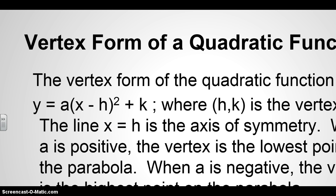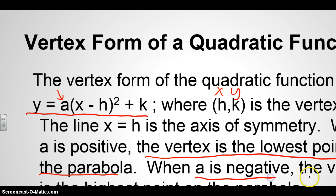So the first idea we're going to talk about today is the vertex form of a quadratic function. And the vertex form of a quadratic function is in the form of y equals a parenthesis x minus h squared plus k. And h comma k is in the form x comma y, thinking of the vertex of your parabola. The line x, as it mentioned, represents h. This is the axis of symmetry. And when a is positive, the vertex is the lowest point on your parabola.